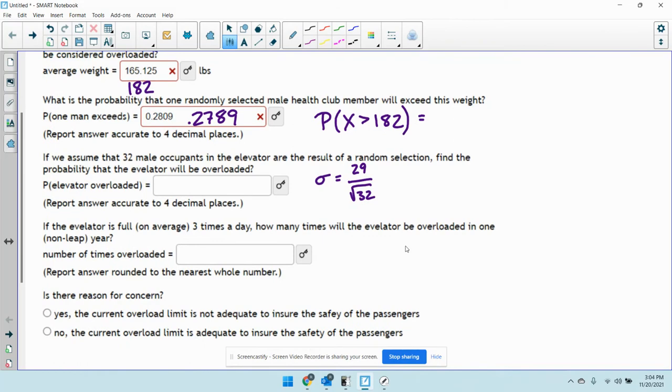Okay, and then it says, if the elevator is full on average three times a day, how many times will the elevator be overloaded in one year? So, if it's full, you would just take this probability, whatever we get here, multiply it by 3, multiply it by 365, and you'll get a number of times it's overloaded.